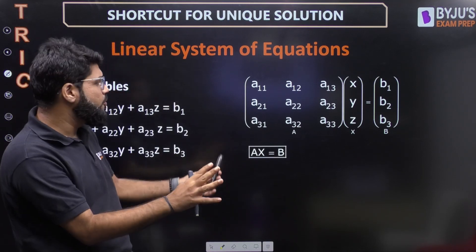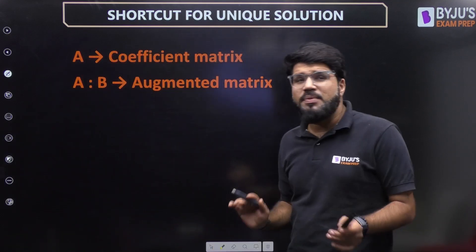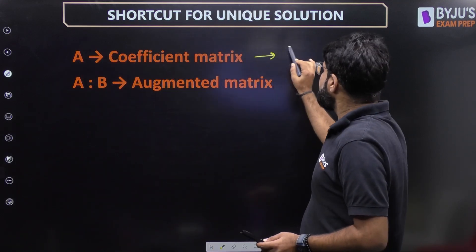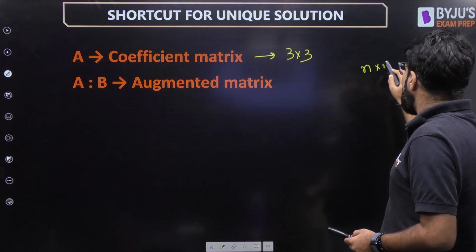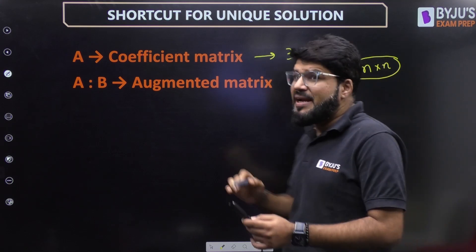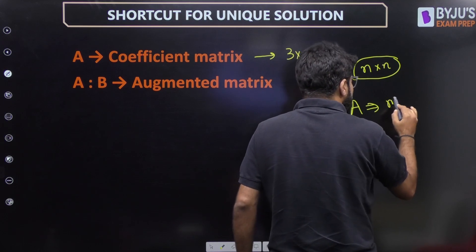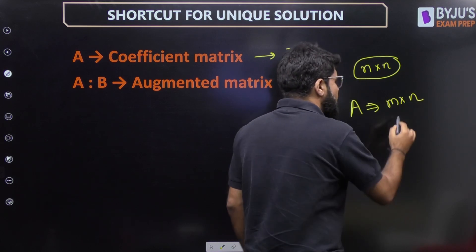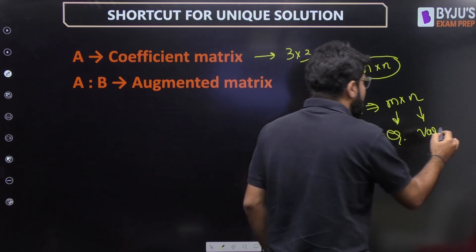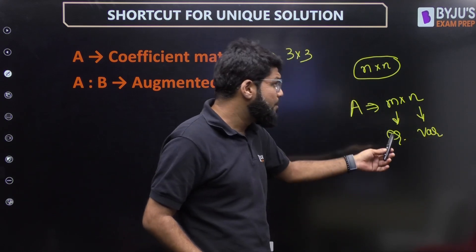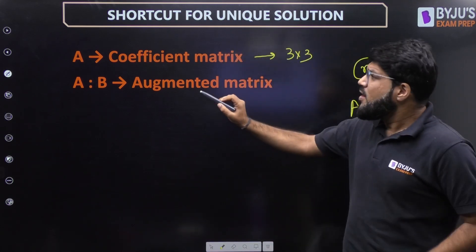Matrix A is known as the coefficient matrix. In the previous case it was 3×3; in general it is n×n if you have n equations and n variables. If it is an under-determined or over-determined system, matrix A is of size m×n, where m is the number of equations and n is the number of variables. That is the general size of matrix A.